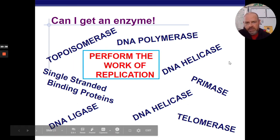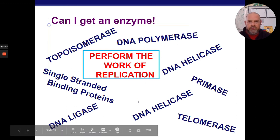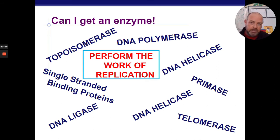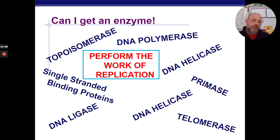To do the work of replication, we need lots of enzymes. Some you've probably heard of — DNA helicase, which unzips your genes. Others you may not have heard of, like telomerase or topoisomerase, which are generally not covered in regular or pre-AP biology. Know what each enzyme does.